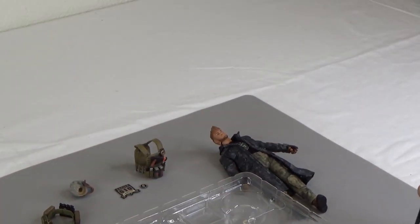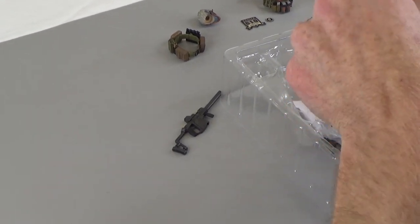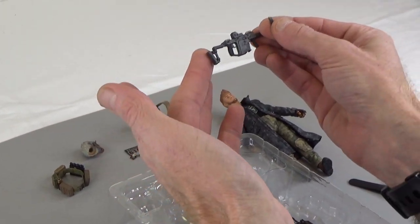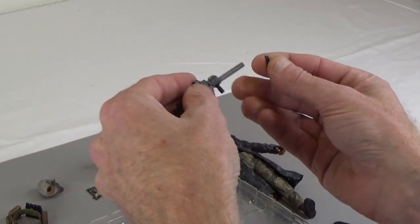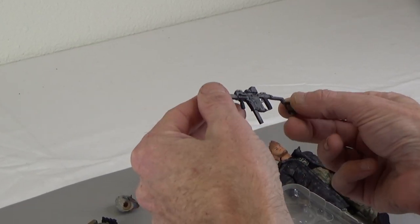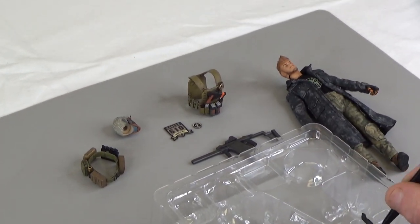Here we have a Kriss Vector submachine gun. It does come with a magazine. Very crisp detail. So it does have a folding stock. The magazine does go in. Great little piece of kit. Very cool. Moving right along.